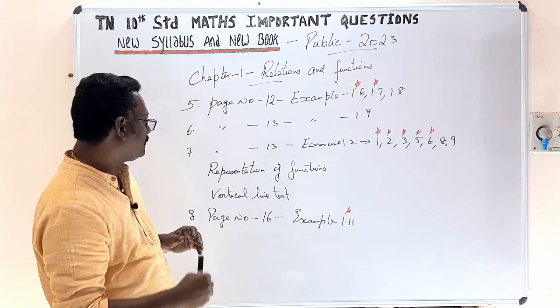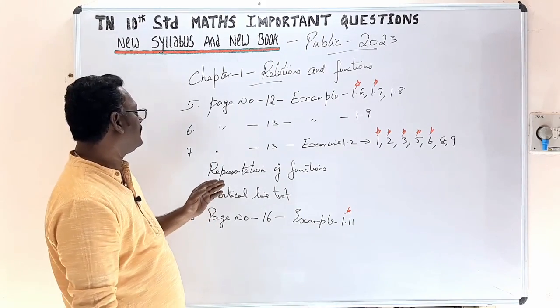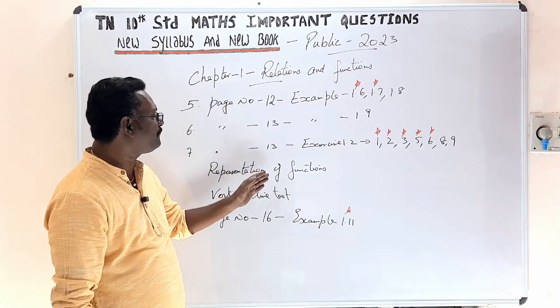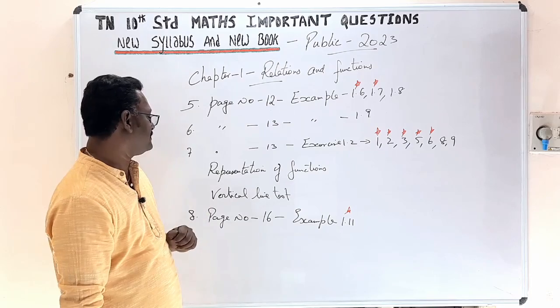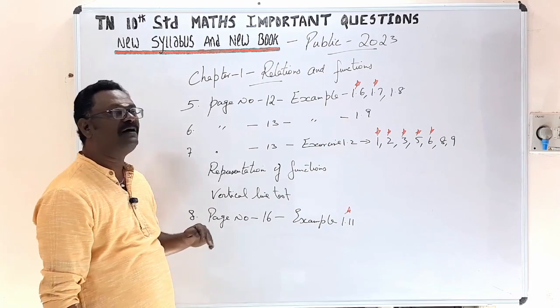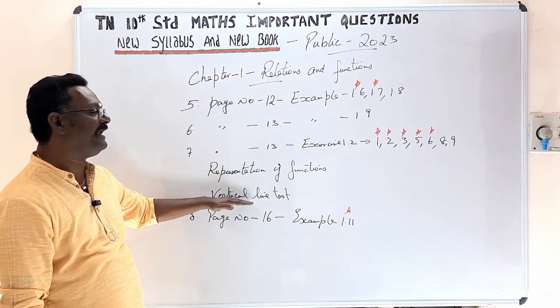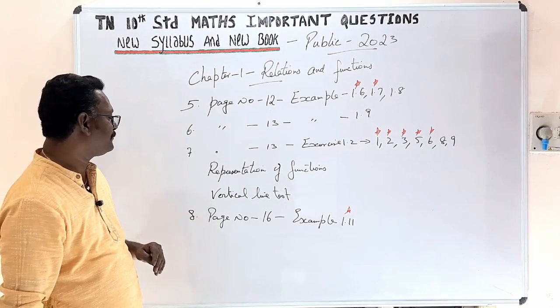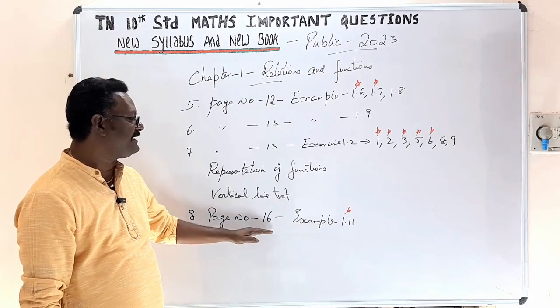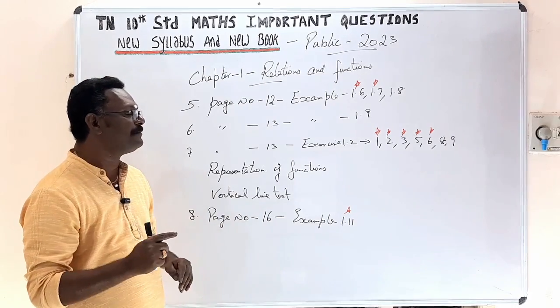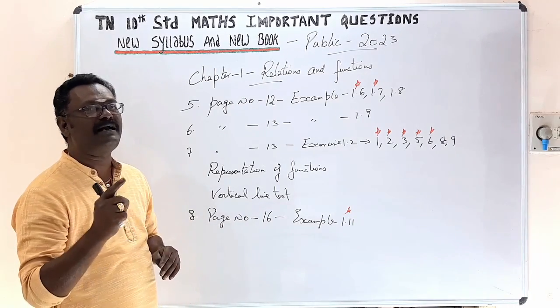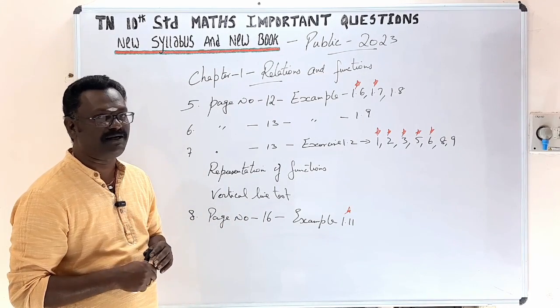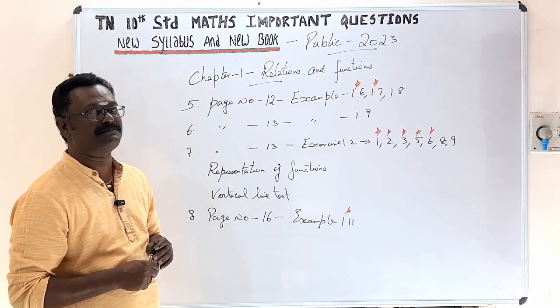Next, let's look at the representation of functions and the vertical line test. Page number 16, example 1.11 is very important.